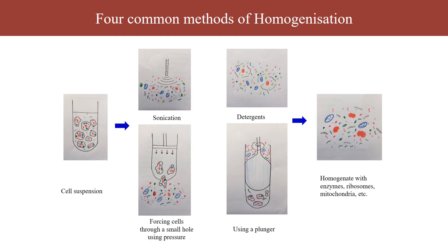There are four commonly used mechanisms for homogenization. The first is sonication, where very high-frequency sound waves are used to break the cell membranes. The second mechanism is by using mild detergents, which break down the plasma membrane because it consists of lipids and can be disrupted.